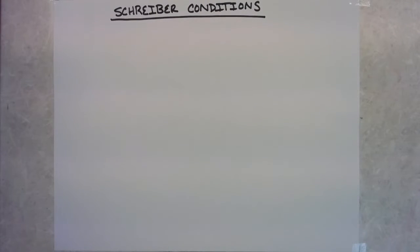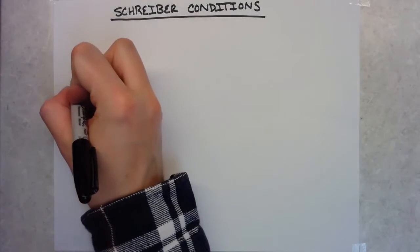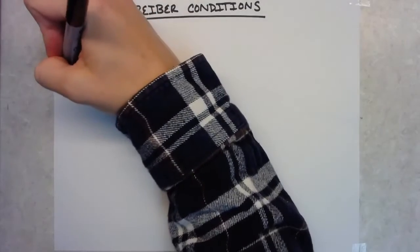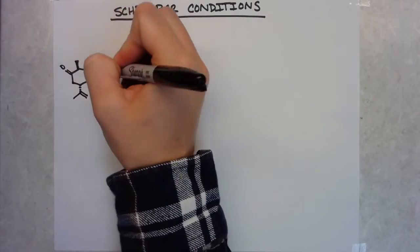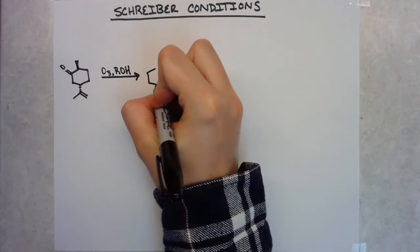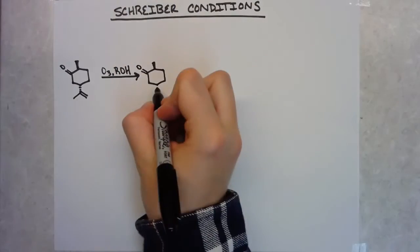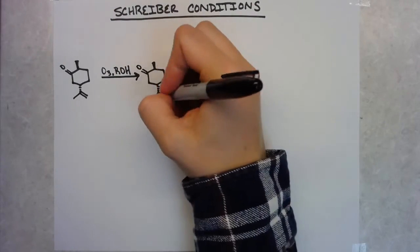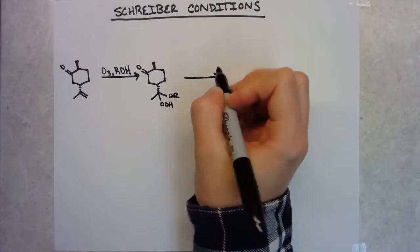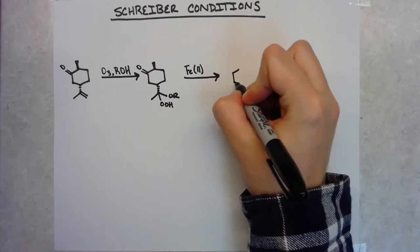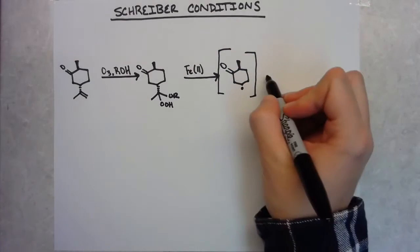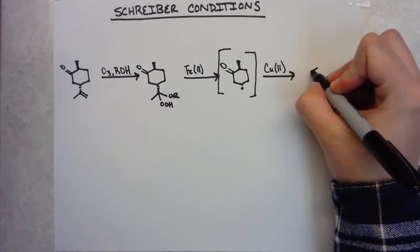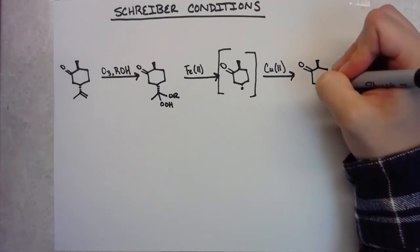So reading through this paper in the mechanistic study when they're kind of describing this reaction, the authors talk about doing this reaction under Schreiber conditions. And what they're referring to there is a precedent from Stuart Schreiber all the way to 1980 using a very similar version of this reaction in a natural products context. So basically the difference between this paper and that paper, they start with an ozonolysis and then they intercept that alpha alkoxy hydroperoxide intermediate that's formed in this paper. They intercept that with a source of iron two to get to the oxy radical and then to further fragment that to the carbon-centered radical.